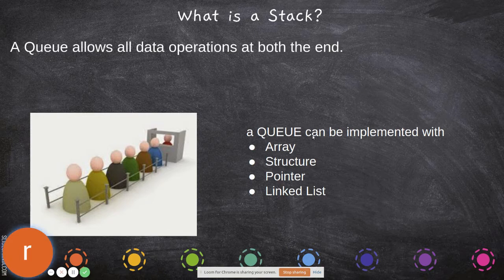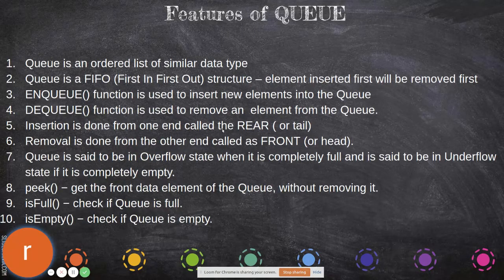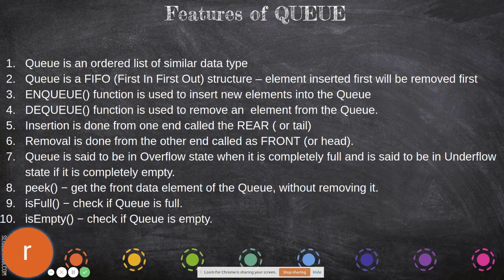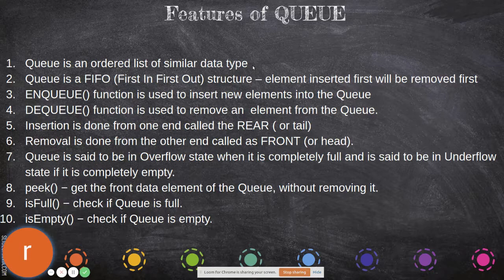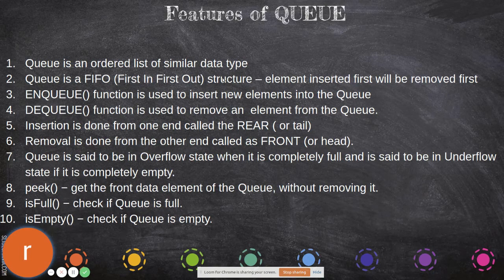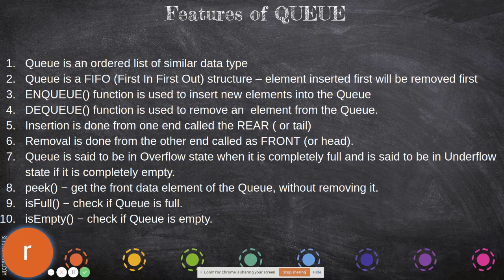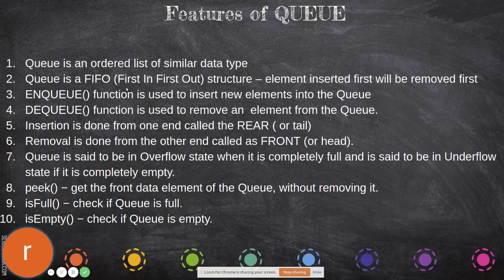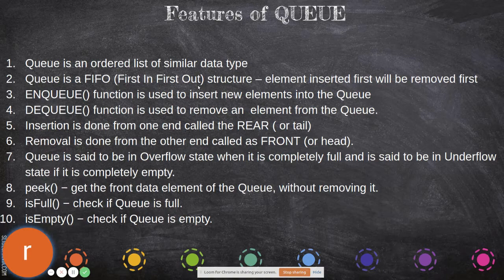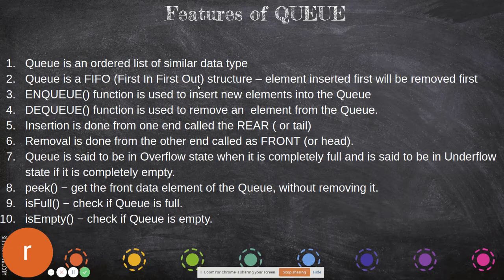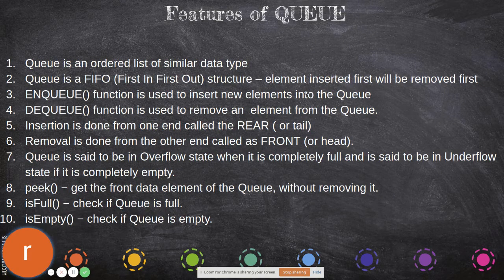What are the features of queue? Queue is an ordered list of similar data types. If it is an integer, we insert only integers; if it is a string, we insert only strings. The technique followed is First In First Out (FIFO), which means the element that has been entered first will be serviced first. The element inserted first will be removed first.